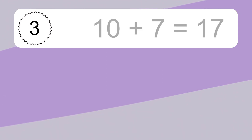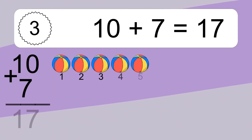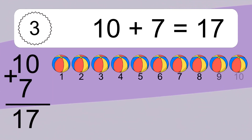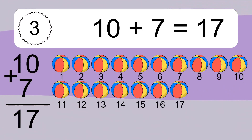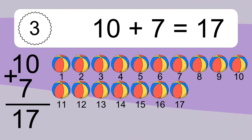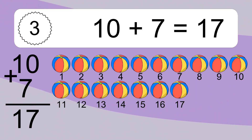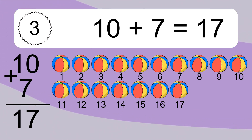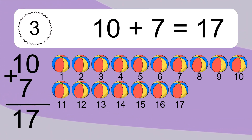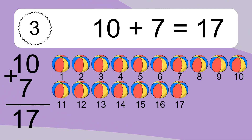10 plus 7 equals what? 10 plus 7 equals 17. Let's count it. 1, 2, 3, 4, 5, 6, 7, 8, 9, 10, 11, 12, 13, 14, 15, 16, 17.